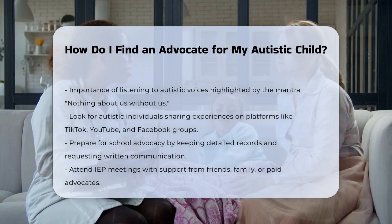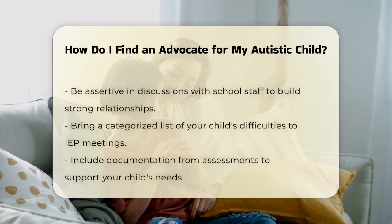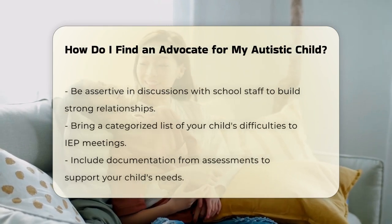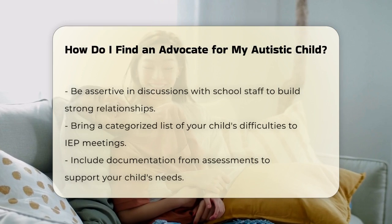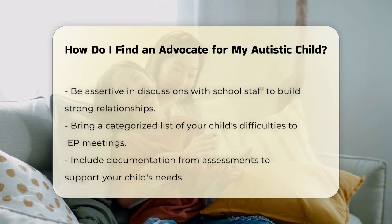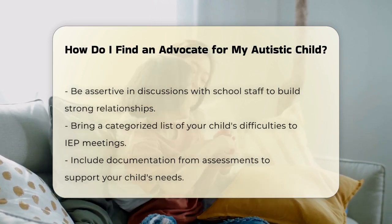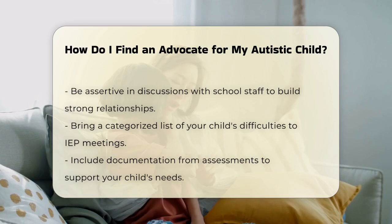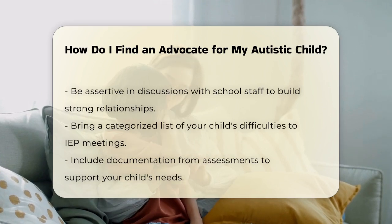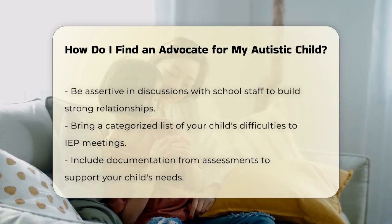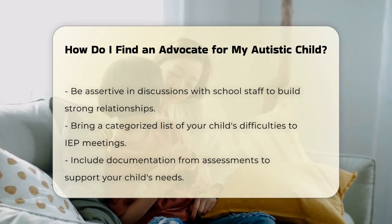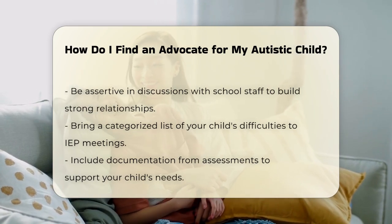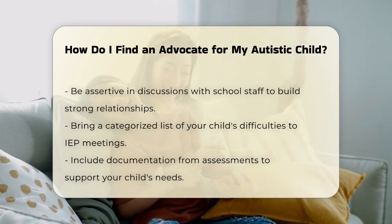When it comes to advocating for your child at school, it's crucial to be prepared. Keep detailed records and request everything in writing. Attend IEP meetings with a friend, family member, or a paid advocate for support. Be assertive but not aggressive, and aim to build strong relationships with the school staff. Bring a list of your child's difficulties categorized by academics, socialization, communication, and behavior, along with any documentation from assessments to support your child's needs.